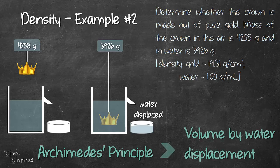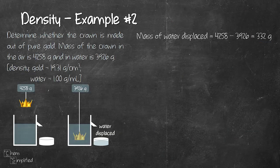This is sometimes referred to as volume by water displacement. It's a popular method to figure out the density of odd-shaped objects. So let's see how we're going to figure out the volume of our crown using this way. We start off by subtracting the two masses that were given. That will help us figure out the mass of the water displaced. So the mass of the crown in the air is 4258 minus the mass of the crown in water, which is 3926.